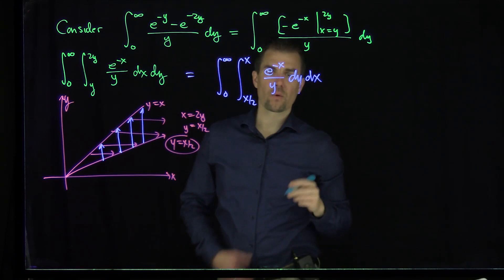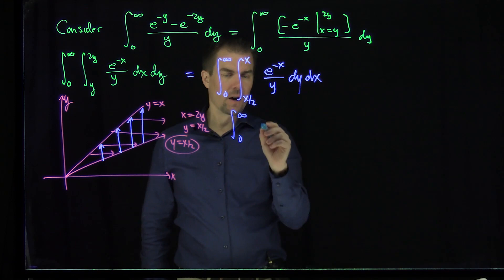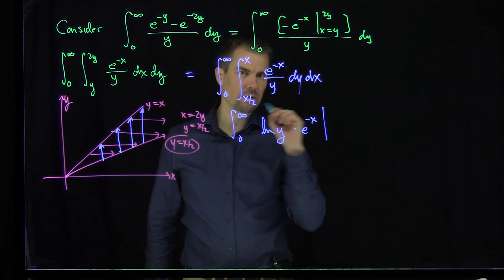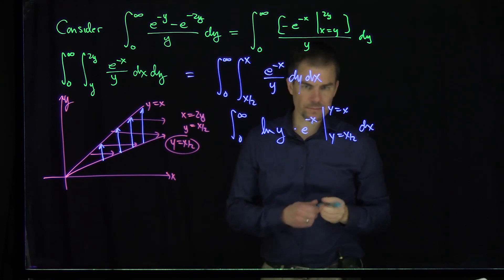Our function is e^(-x)/y dy dx. Now the y antiderivative of this is ln(y). So it's going to be the integral from 0 to infinity of ln(y)·e^(-x) evaluated from y=x/2 to y=x dx.